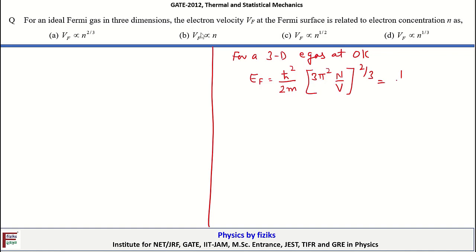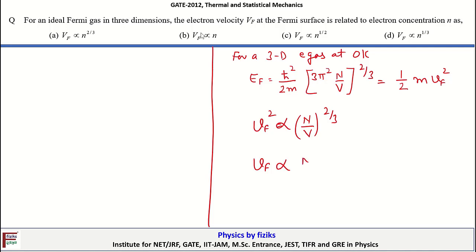This equals (1/2)m·V_F², where V_F is the Fermi velocity. From this expression, we notice that V_F² is proportional to n^(2/3), which means V_F is proportional to n^(1/3). Therefore, the correct option is D.